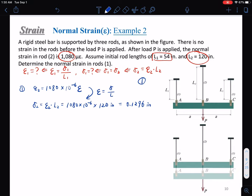Now in the second step, delta one equals delta two equals 0.1296 inches.